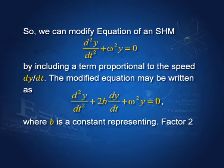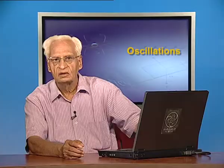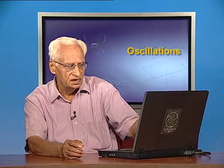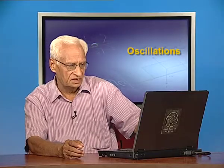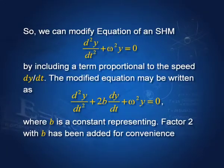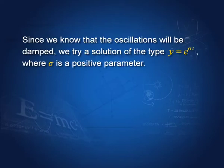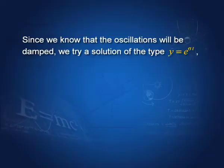This factor of 2 we shall see is very useful, but otherwise it does not affect anything, where b is a constant representing the forces. Since we know that the oscillations will be damped — we have this experience whenever there are frictional forces, the oscillations are damped.